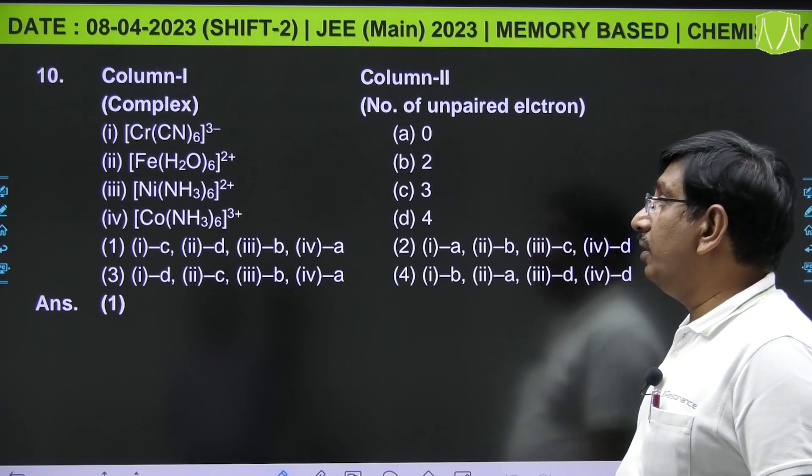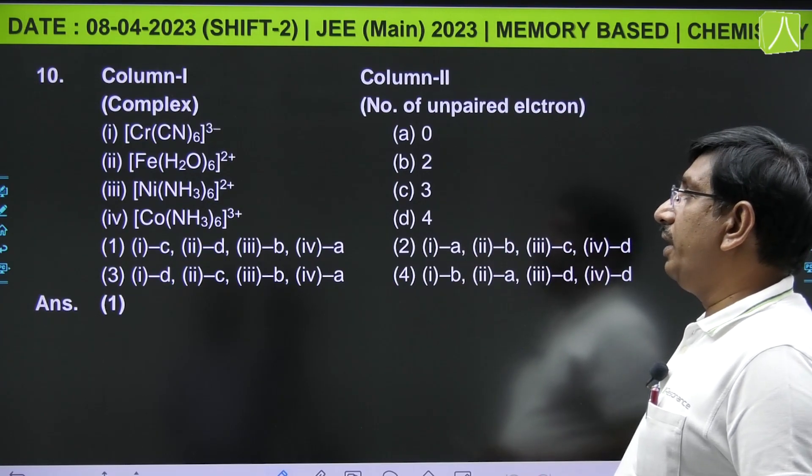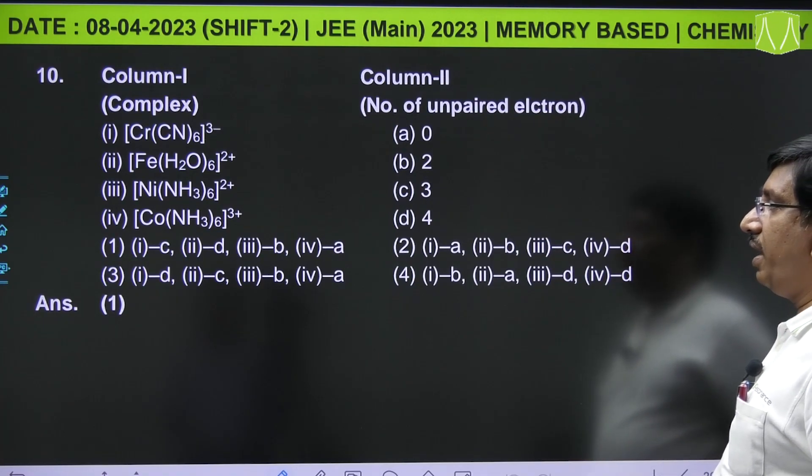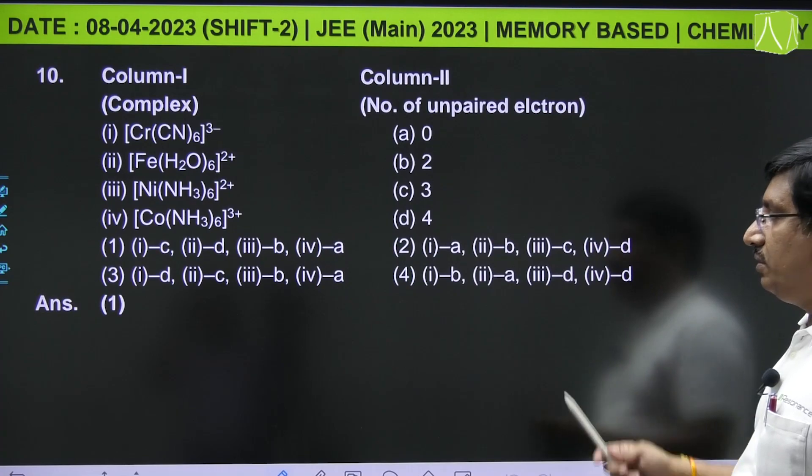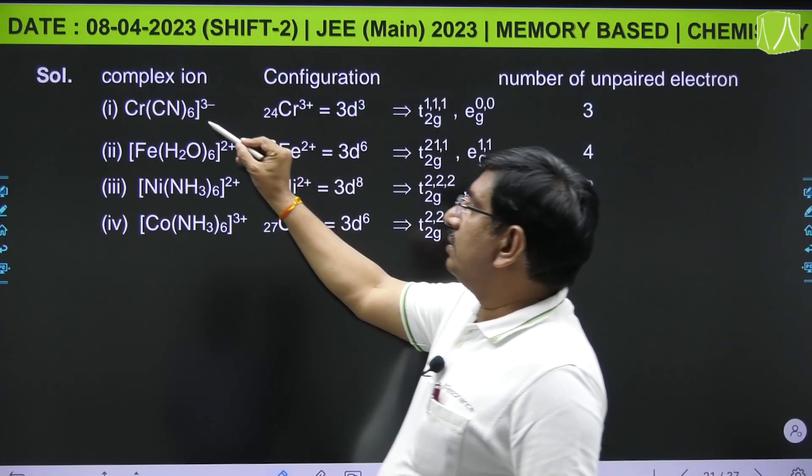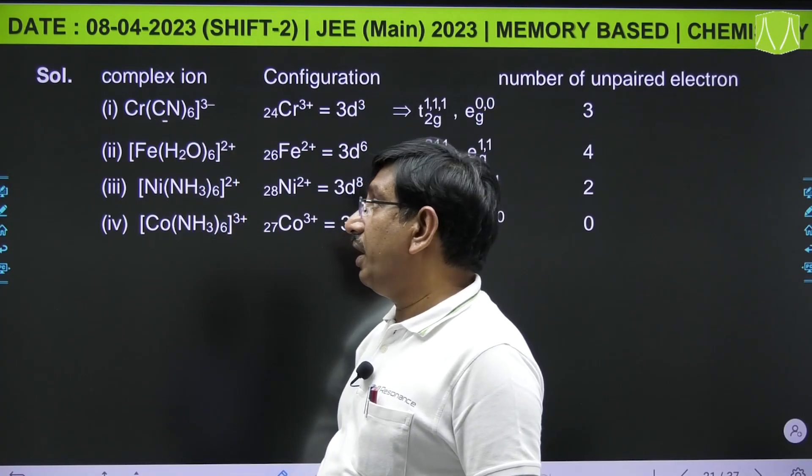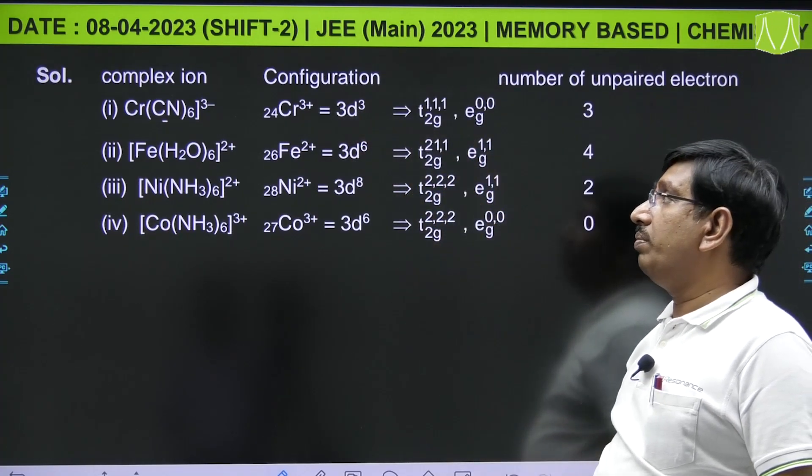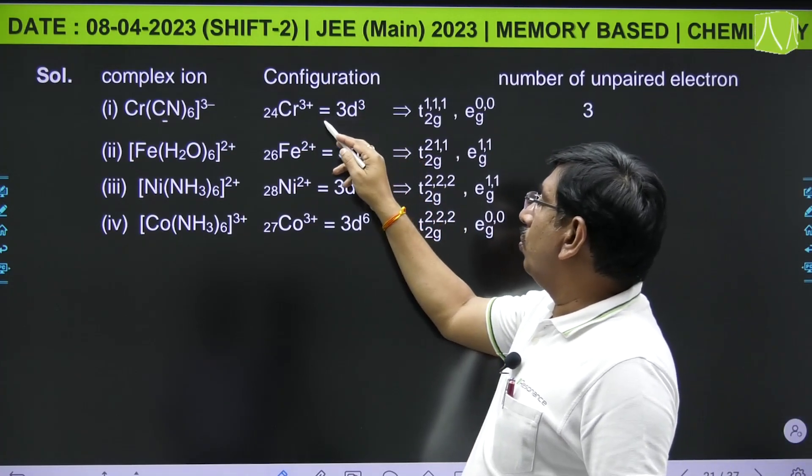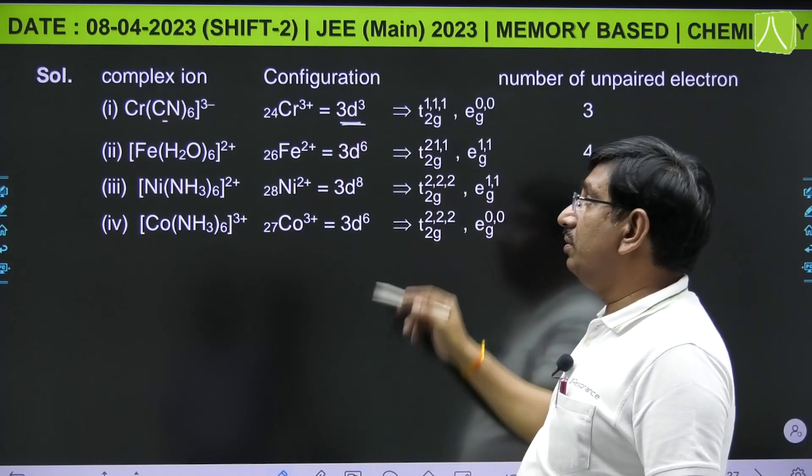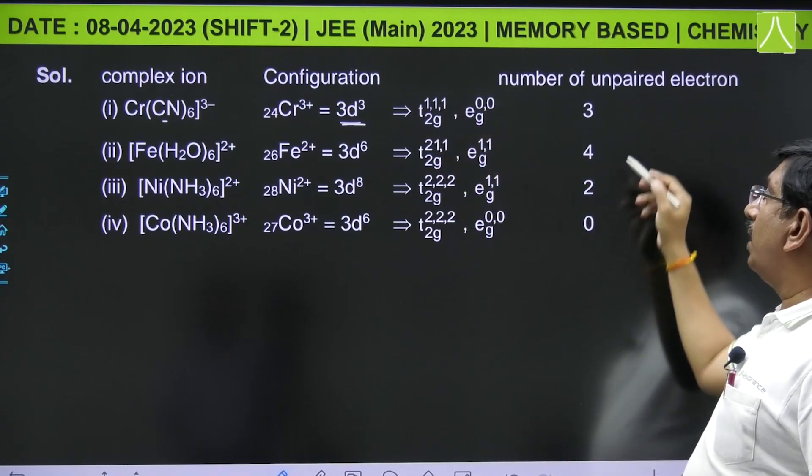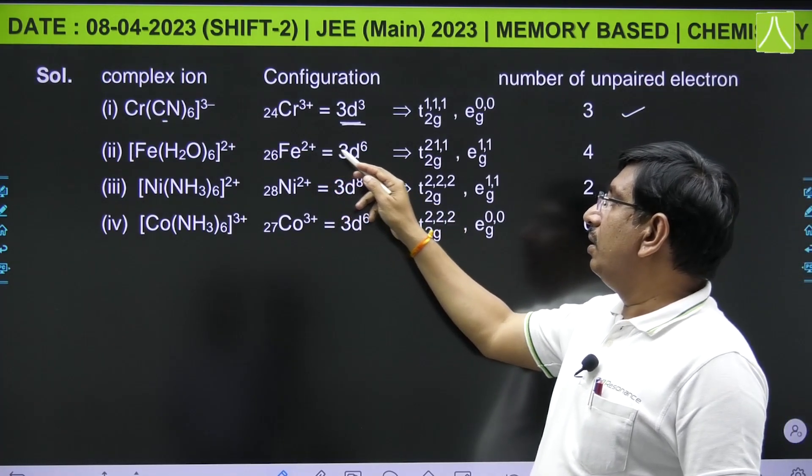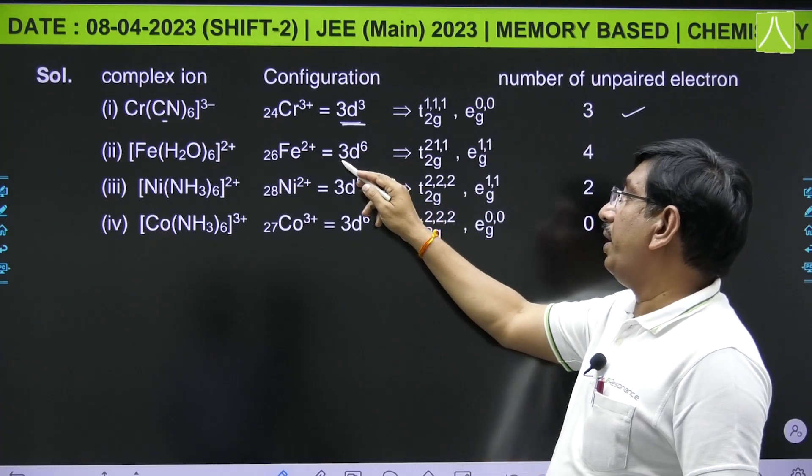Again from coordination: match the number of unpaired electrons and the complex [Cr(CN)₆]³⁻, [Fe(H₂O)₆]²⁺, [Ni(NH₃)₆]²⁺, [Co(NH₃)₆]³⁺. In [Cr(CN)₆]³⁻, CN is strong field ligand and it is octahedral complex, with oxidation state of chromium as +3. Chromium in +3 state has 3d³ configuration: t₂g with 1,1,1 and eg 0,0. Number of unpaired electrons are 3. And [Fe(H₂O)₆]²⁺, iron is in +2 state with 3d⁶ configuration, t₂g 2,1,1 and eg 1,1, because water is weak field ligand.